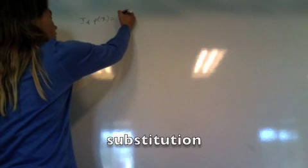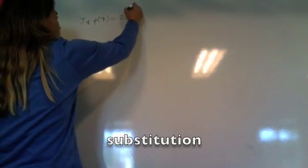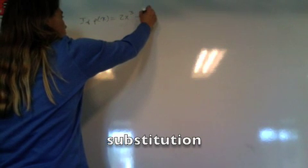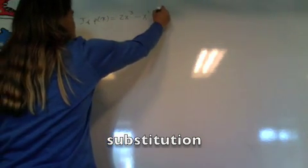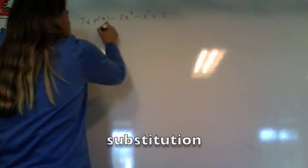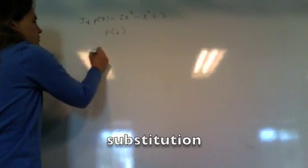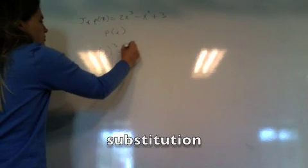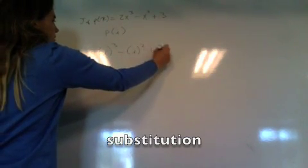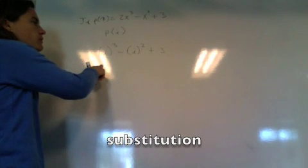f(5) equals 2x to the third minus x squared plus 3. Find p(i)? Alright, so p(i), we just substitute i in for x. So 2 times i cubed minus i squared plus 3.